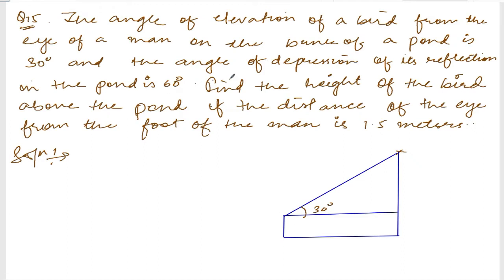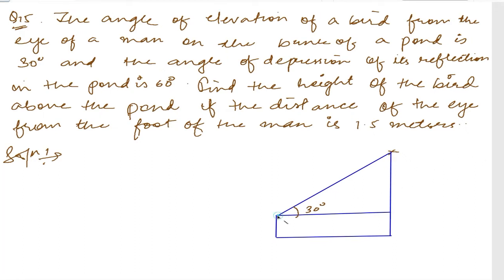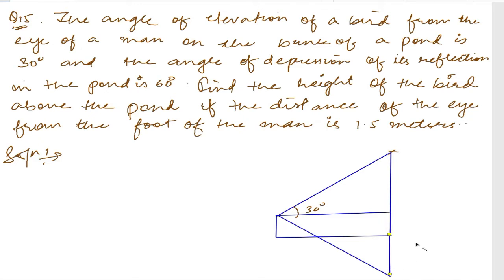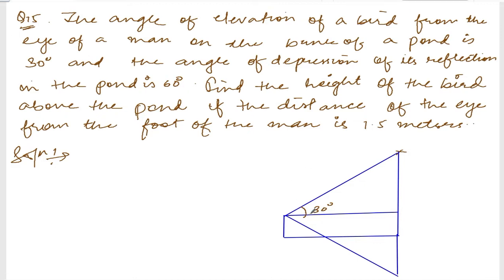The angle of depression of its reflection on the pond is 60 degrees. The man is standing and looking at the reflection in the pond that is down here, and this angle comes out to be 60 degrees. We need to find the height of the bird above the pond if the distance of the eye from the foot of a man is 1.5 meters.